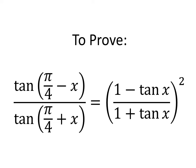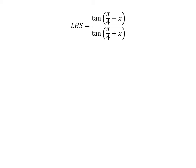In this video, we will learn to prove the equation: tangent of (π/4 − x) divided by tangent of (π/4 + x) is equal to the square of (1 − tan x) divided by (1 + tan x). The left-hand side of the equation to be proved is tangent of (π/4 − x) upon tangent of (π/4 + x).